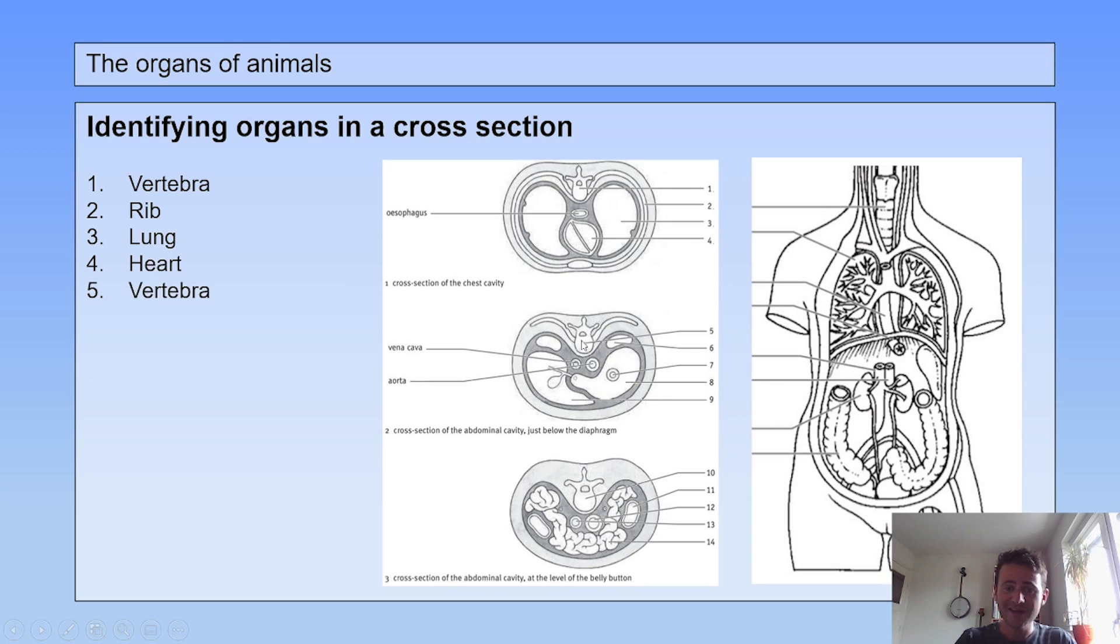Number five, again, vertebra. Six is one of your kidneys. Seven is a part of your esophagus. Eight is your stomach. Nine is the liver. And they already gave away the vena cava and the aorta.